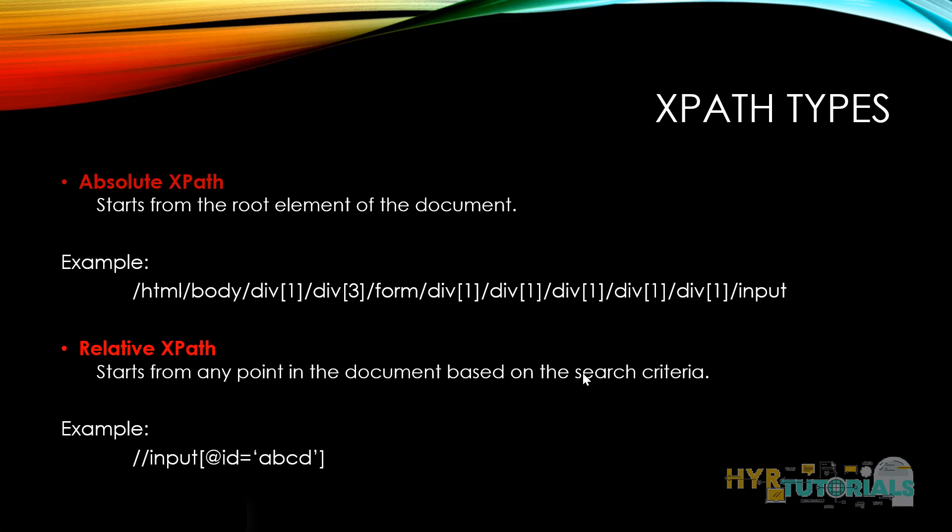One is absolute XPath and the next one is relative XPath. In absolute XPath, the XPath starts from the root element and it will always start with a single slash. Single slash means the current node. So it will start from the root element and will use a single slash at the beginning.